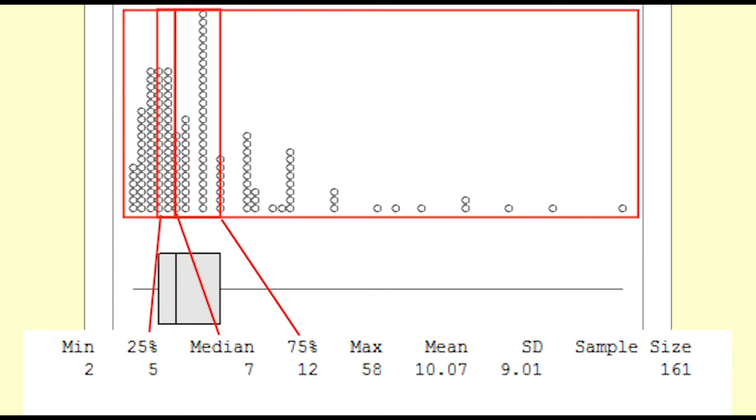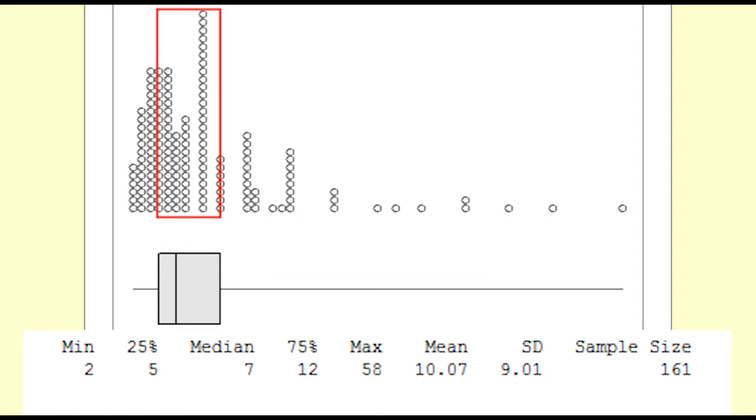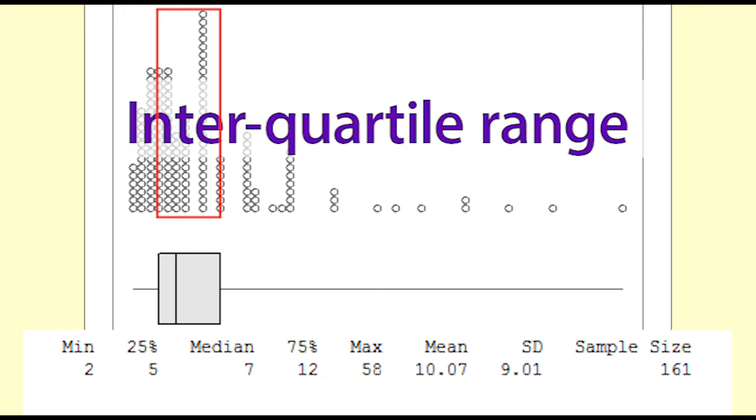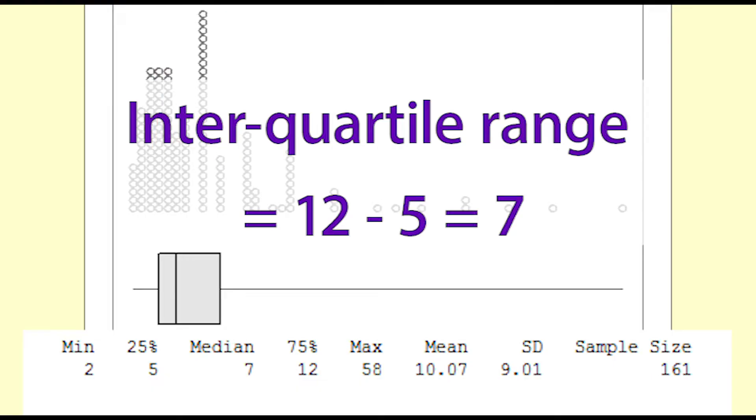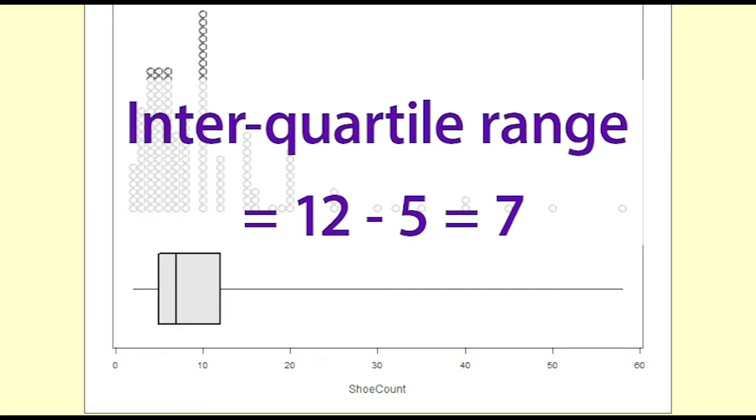In this case of the numbers of pairs of shoes the lower quartile is 5 and the upper quartile is 12. In between the lower and upper quartiles are the middle 50% of the observations. The interquartile range is the difference or distance between the upper quartile and the lower quartile and in this case the interquartile range is 12 minus 5 which equals 7. The box plot is used to show the interquartile range. The box goes between the lower and upper quartiles.